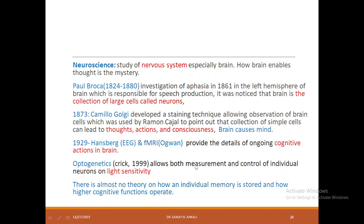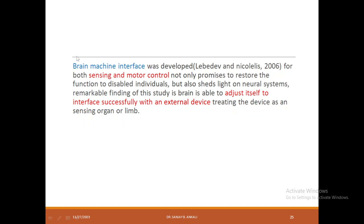Optogenetics allows both measurement and control of individual neurons based on light sensitivity. Having so many studies on the human brain, it is still a mystery — there is no foundation theorem or proof explaining how thoughts are created in the human brain. During 2006, a human brain-machine interface was conducted where an externally motor-controlled limb was attached to a disabled person, and they concluded that over time the brain will adapt to this externally attached limb and start treating it as a natural organ.